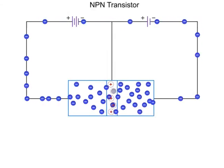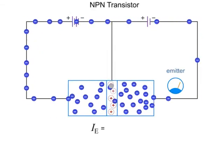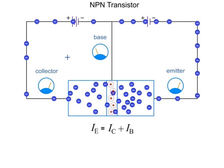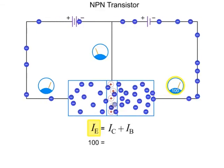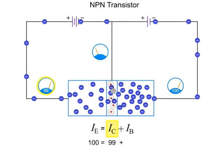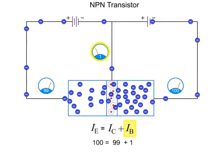In an NPN transistor, the emitter current is the sum of the collector current plus the base current. So, if you have 100 milliamps at the emitter, you will have 99 milliamps at the collector and 1 milliamp at the base.